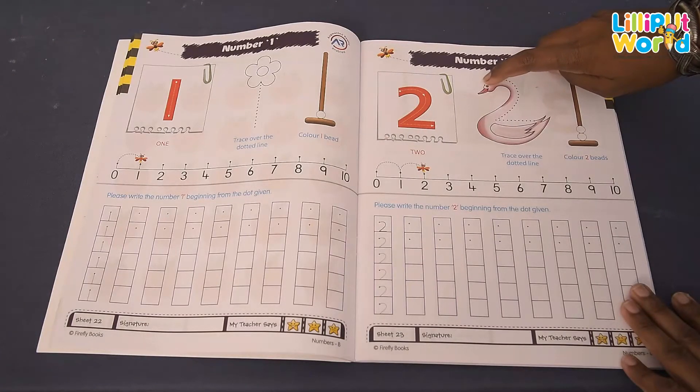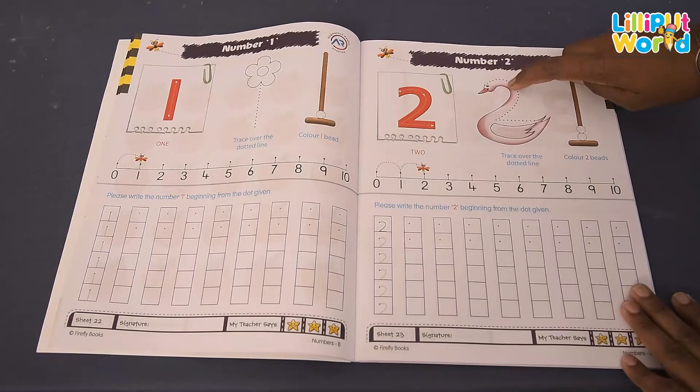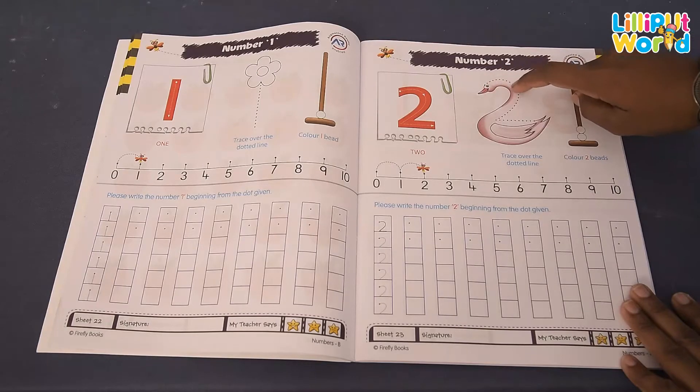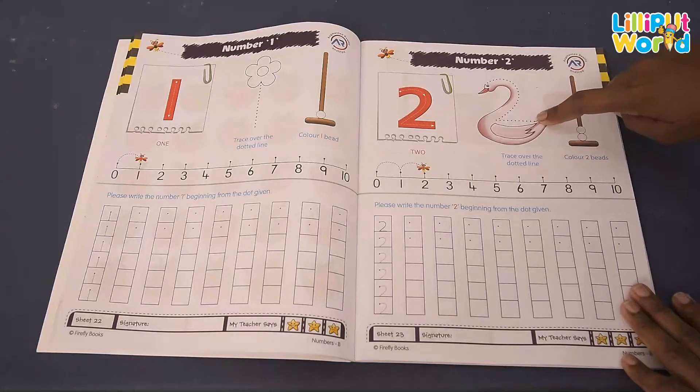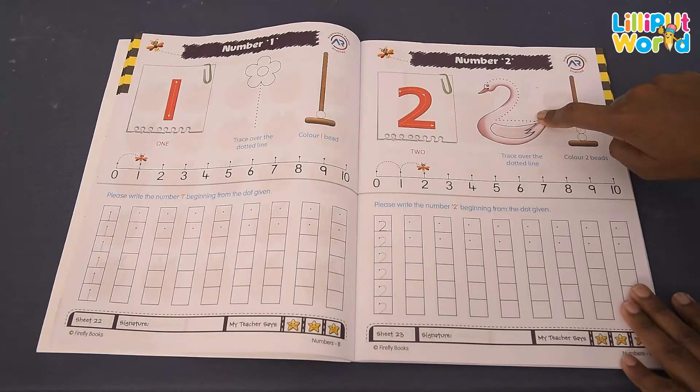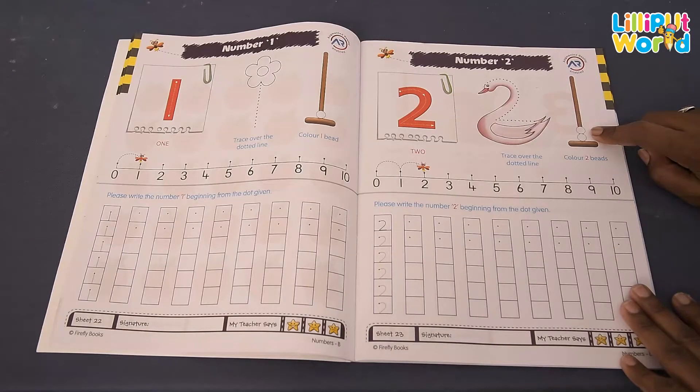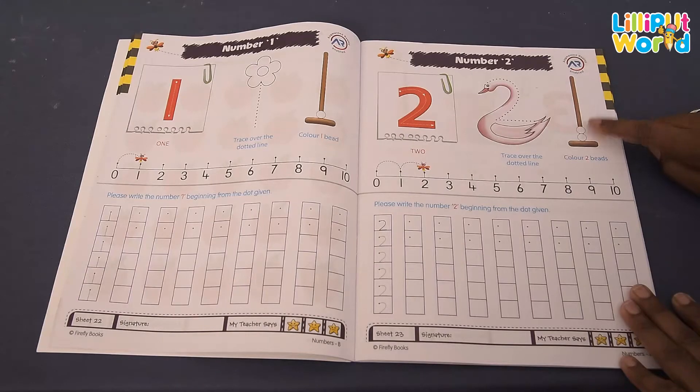Now all dots you have to join properly here. Curve, slanting and sleeping line. So this is number 2. Now count the birds, how many birds are they? 1 and 2. So first you have to color and count.